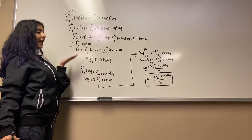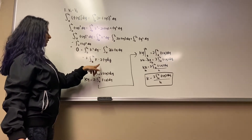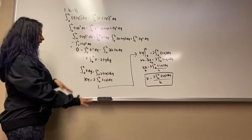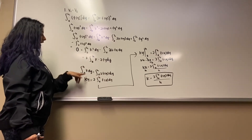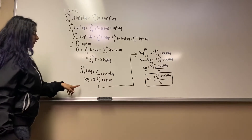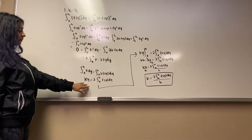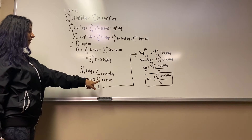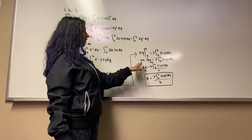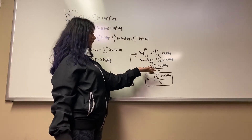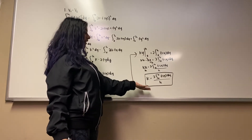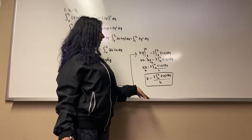We realized we could pull out k, which is a constant, and then added the 2·f(y) dy to the other side. We rewrote it as the integral from 0 to H of k dy equals the integral from 0 to H of 2·f(y) dy. We integrated and got k·y equals 2 times the integral of f(y) dy. Evaluating from 0 to H gives k·H minus 0, and dividing out H gives us k equals 2 times the integral of f(y) dy divided by H.